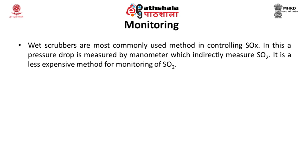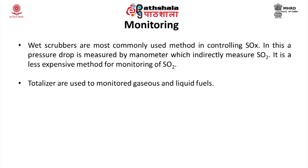The molecular weight of SO2 is double that of elemental sulfur. By monitoring the rate of fuel use, the emission of SO2 is calculated by assuming complete conversion of the fuel containing sulphur. Totalizers are used to monitor gaseous and liquid fuel. Another monitoring method is to establish a relationship between fuel use and steam production for a fuel.